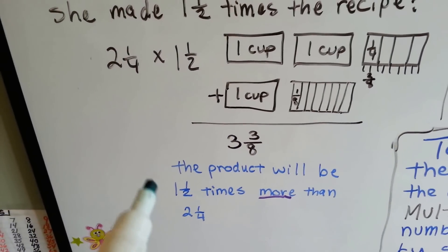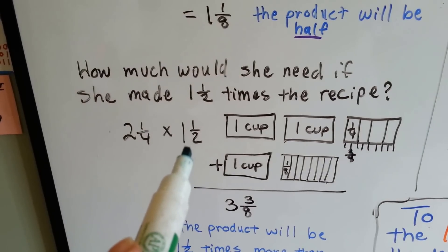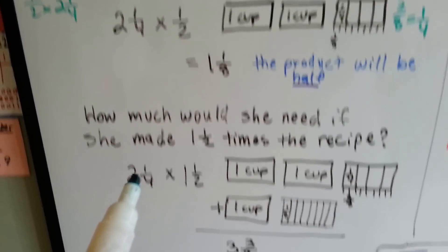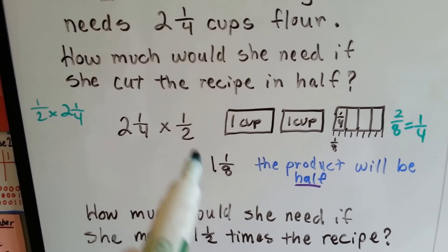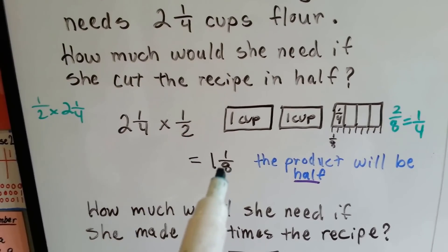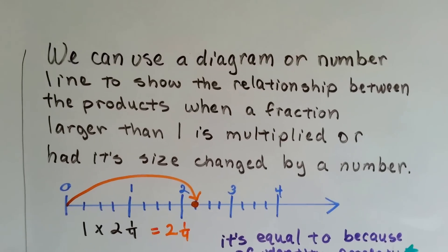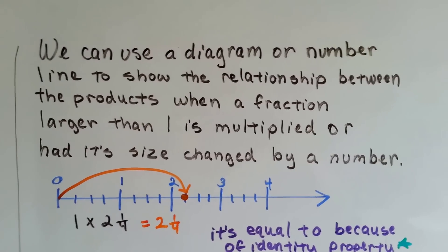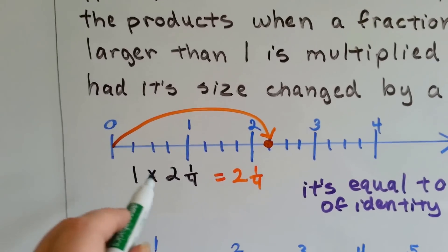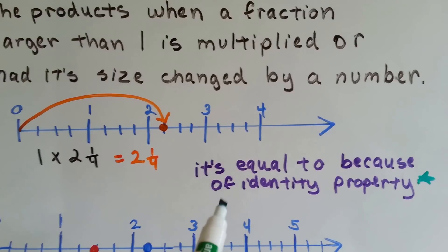The product will be 1 and 1 half times more than 2 and 1 fourth, because we multiplied it by a number that was more than 1 — so it was bigger than 2 and 1 fourth. When we multiplied it by a fraction smaller than 1, the product ended up being smaller than 2 and 1 fourth. We can use a diagram or a number line to show the relationship between products when a fraction larger than 1 is multiplied. 1 times 2 and 1 fourth is 2 and 1 fourth — it's equal to, because of the identity property.